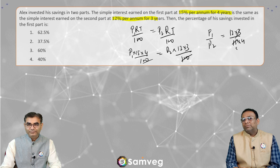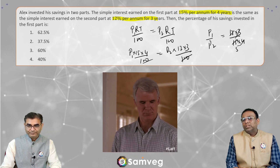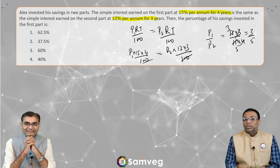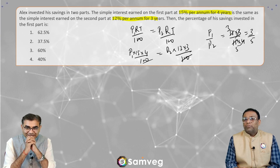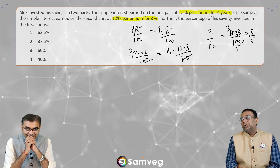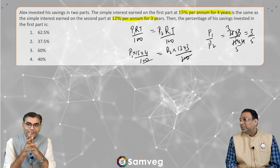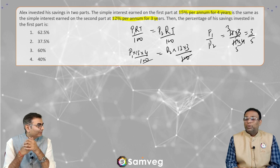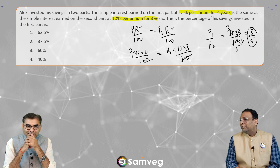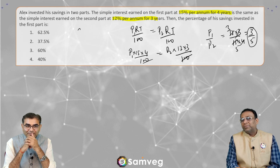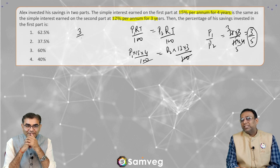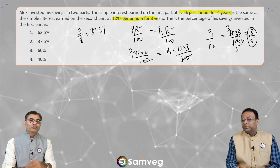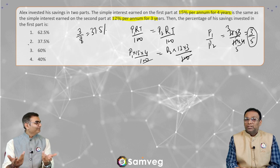P1 by P2 equals 12 into 3 divided by 15 into 4. That is 36 divided by 60 — simplifying: 3 fives are 15, 3 fours are 12 — so that is equal to 3 by 5. The percentage of his savings invested in the first part: total saving is 3 plus 5 equals 8. So first part saving is 3 by 8, which is equal to 37.5%.